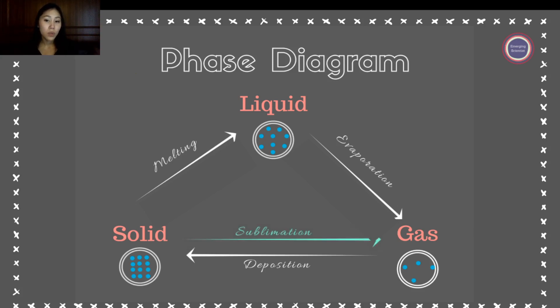So when we go from a solid to a gas, it's also known as sublimation. When we go from a gas to a liquid, that's condensation. When we go from a liquid to a solid, that's also known as freezing.